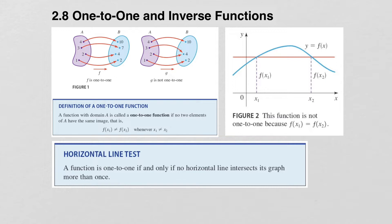We have an illustration up above. A one-to-one function is where one x value gets assigned exactly one y value, and every y value only comes from exactly one x value. This first example here is a one-to-one function. This one is not — here you can see that both elements 3 and 2 both go to the same y value of 4.